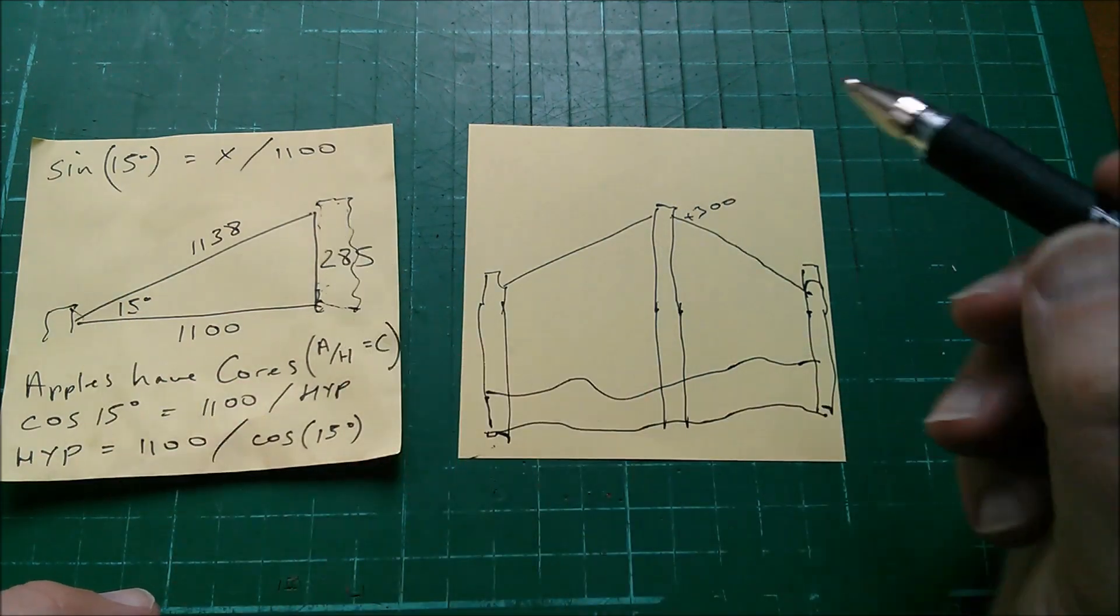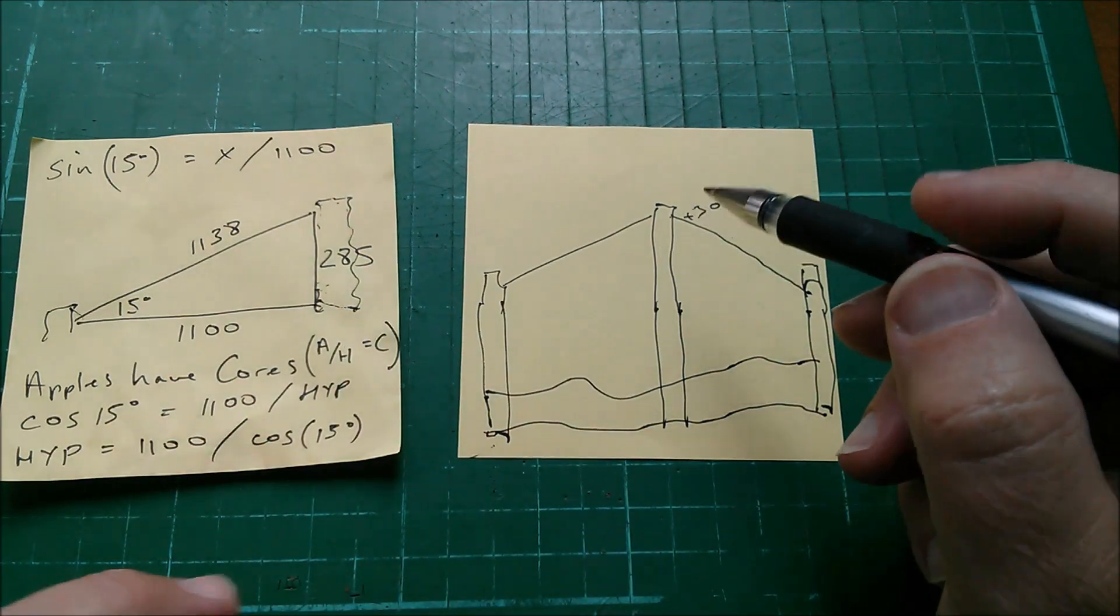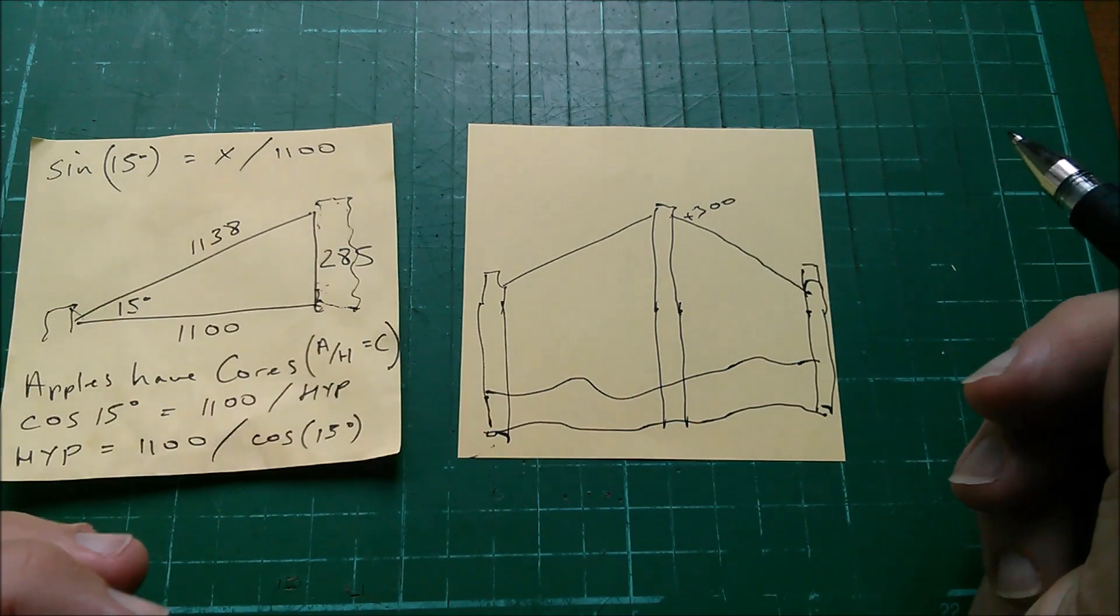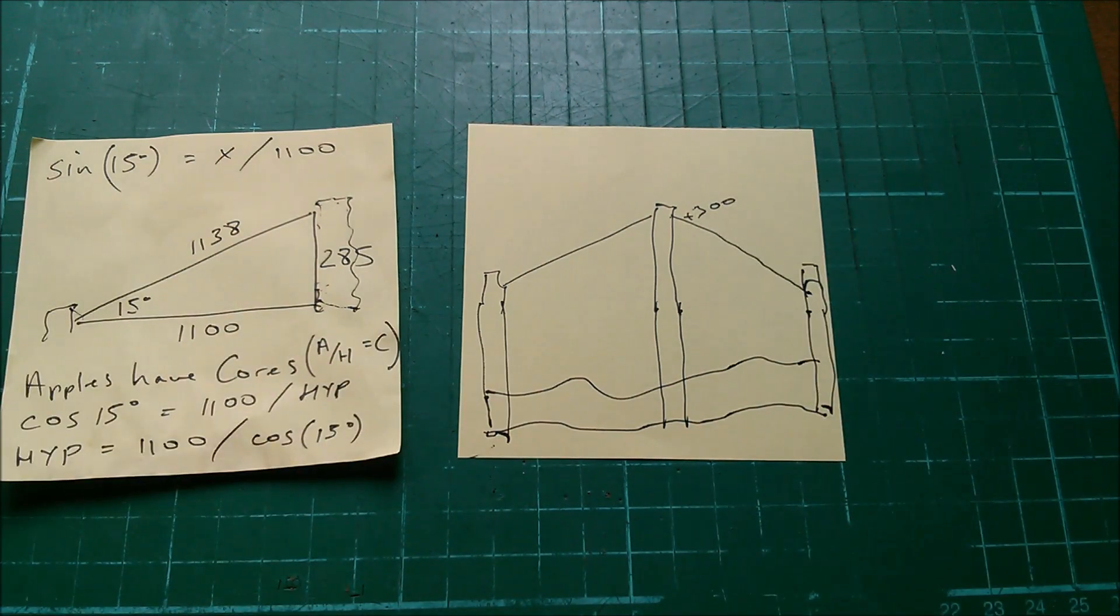Also, 300 millimeters is about a foot, so if you're doing this in Imperial, it kind of works.